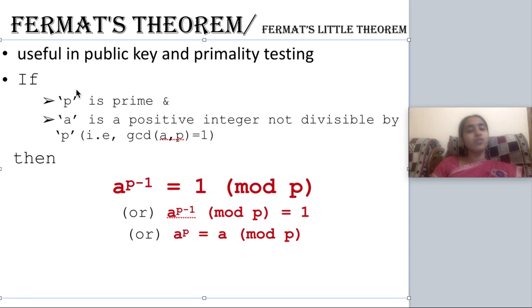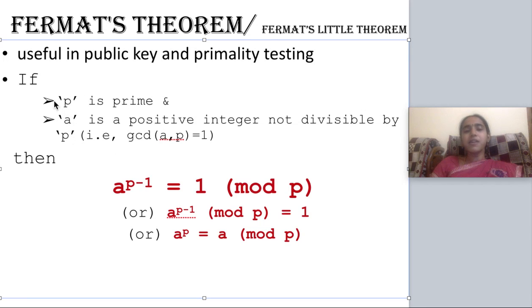This theorem involves two numbers: a number P which is a prime number, and A which is a positive integer. This integer must not be divisible by P — that is, the GCD of A and P must be equal to 1. You can apply Fermat's Theorem only if both these conditions are satisfied: P must be prime and GCD of A and P must equal 1.